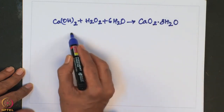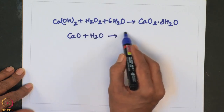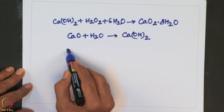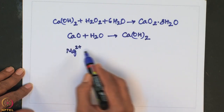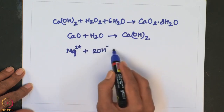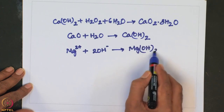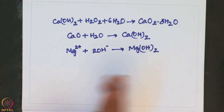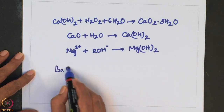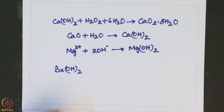As already mentioned, calcium oxide reacts with water to give calcium hydroxide. Similarly, if we take magnesium 2+ ions and react with hydroxide ions, it leads to the formation of magnesium hydroxide. Among all hydroxides of group 2 elements, barium hydroxide is the most stable and most soluble hydroxide.